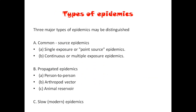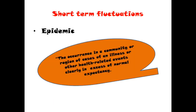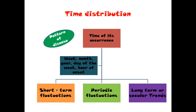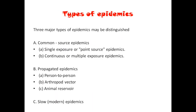Types of epidemics under short-term fluctuation include: common source epidemic and propagated epidemic. Propagated epidemic spreads from person to person — like COVID-19. Common source epidemic originates from a point source where a single locality spreads a lot of disease — like food poisoning or the Bhopal gas tragedy. Or from continuous or multiple exposure — like a well of contaminated water or a single source spreading disease to many people. Epidemics can be classified as common source, propagated, and slow epidemics.